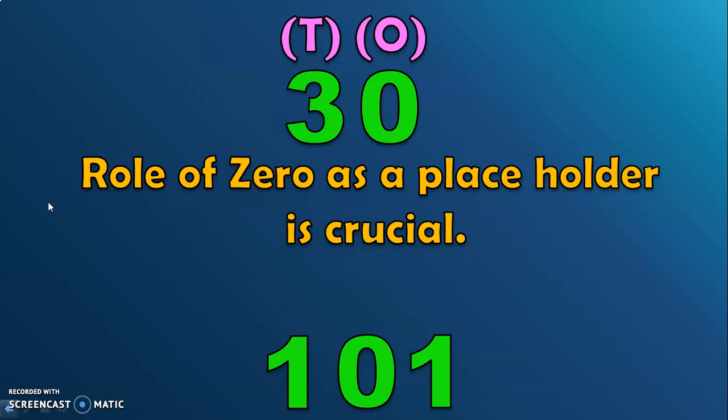One hundred one, in which one is in the ones place, zero is in the tens place and one is in the hundreds place. In this case, the tens position is empty. So, the number zero stands in the empty place and holds the position.